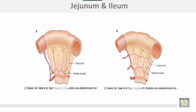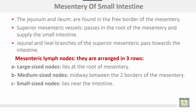Here is the jejunum and here is the ileum. This is the mesentery containing blood supply — the arterial arcades and the vasa recta. There are also arterial arcades and vasa recta shown: shorter in the ileum and longer in the jejunum.